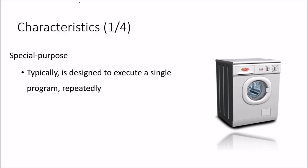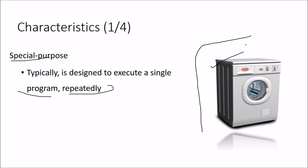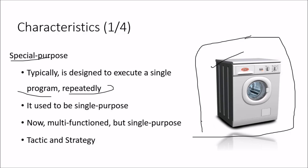What are the characteristics of embedded systems? First, they are special purpose, meaning they are typically designed to execute a single program repeatedly — like a washing machine, which works exactly the same way each time. This is single purpose, not multi-function.